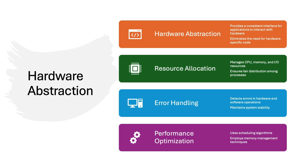An operating system performs key functions such as hardware abstraction, resource allocation, error handling, and performance optimization. It provides a consistent interface for applications, manages resources, detects and handles errors, and optimizes performance using various techniques.